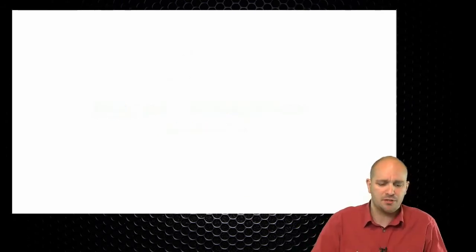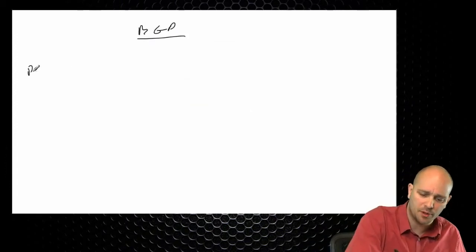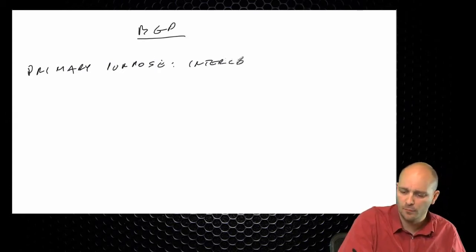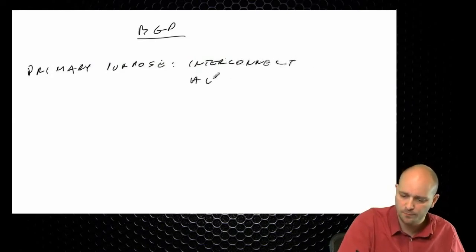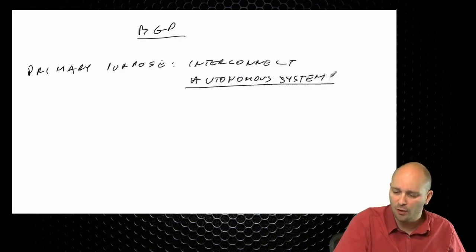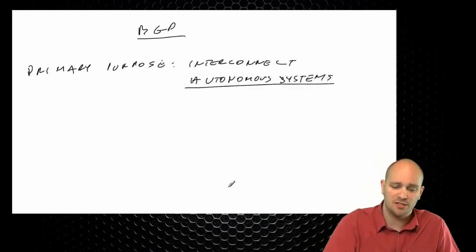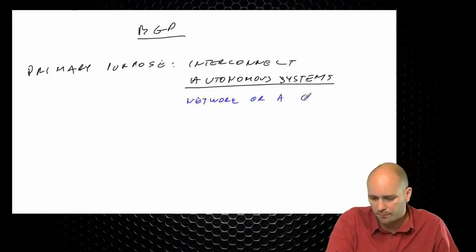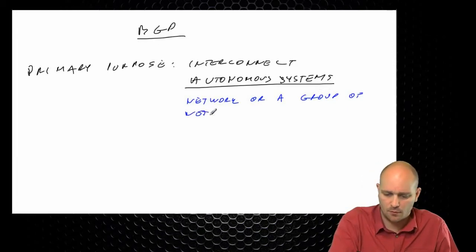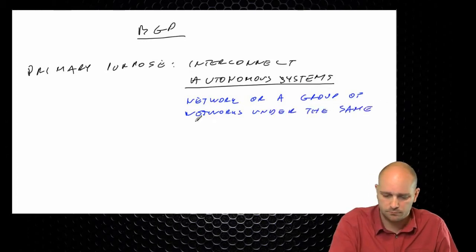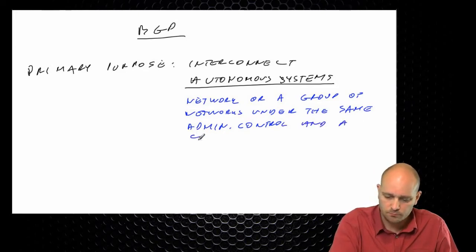The primary purpose of BGP is to interconnect different autonomous systems. What are autonomous systems? There are many definitions, but the one I like the most: it's a network or a group of networks under the same administrative control and a common routing policy.